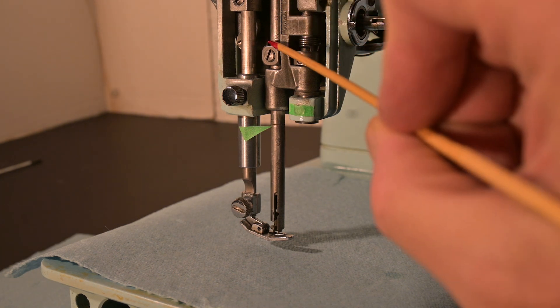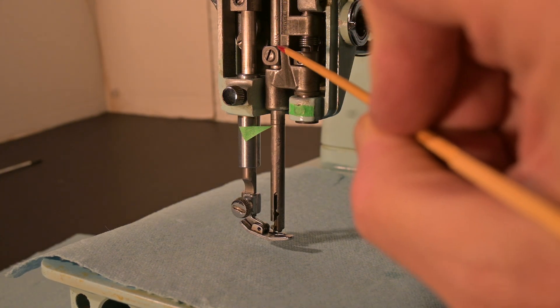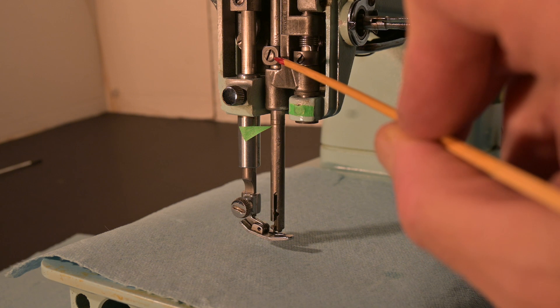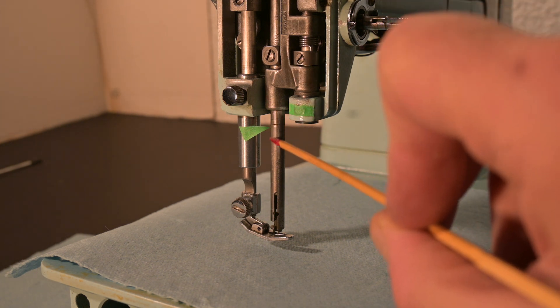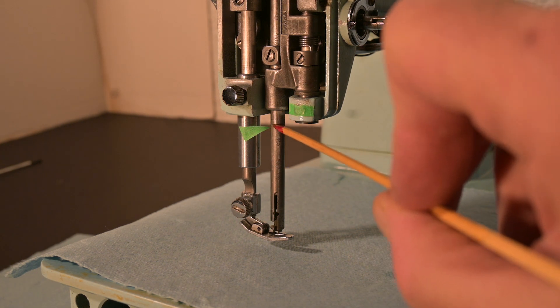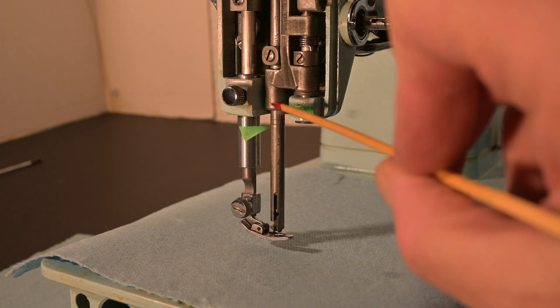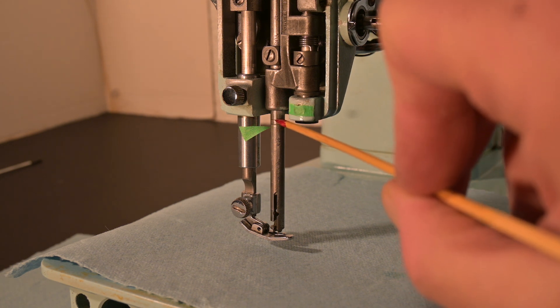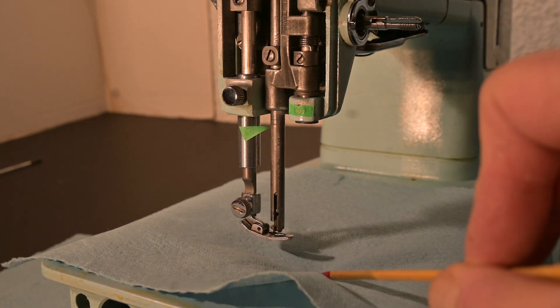This is the needle bar, this thing right here going down. There's the needle bar clamp screw. There's a needle bar down here, and there are the markers to set the needle bar position. The top one is to set the needle bar position, which is what this video is about.